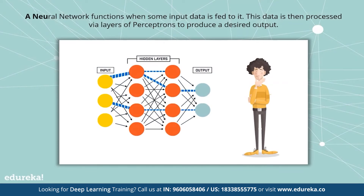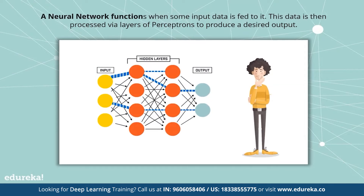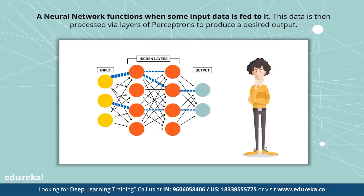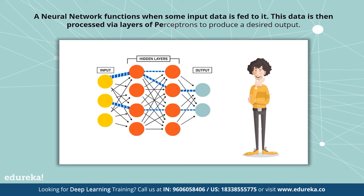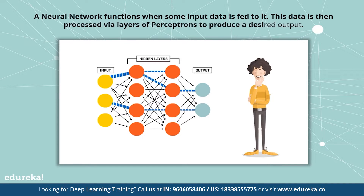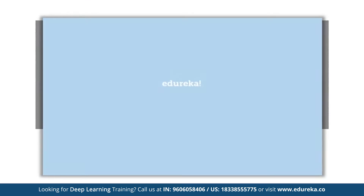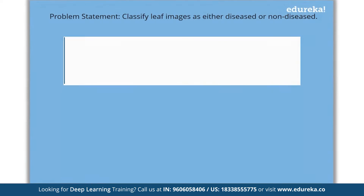A neural network functions when some input data is fed to it. This data is then processed via layers of perceptrons to produce a desired output. Let's understand neural networks with a small example.